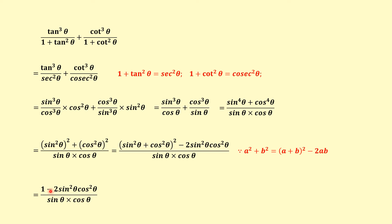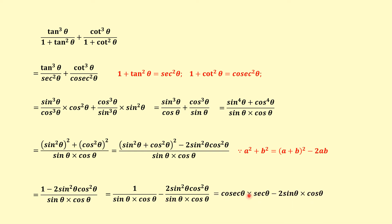Now we have two terms. We split: 1/(sinθ · cosθ) minus 2sin²θ · cos²θ/(sinθ · cosθ). The first term gives cosecθ · secθ. Canceling from the second term, the remaining is minus 2sinθ · cosθ. This proves the identity.